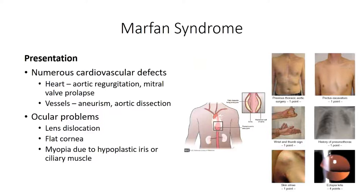Numerous cardiovascular effects have also been noted, due to the expression of elastin fibers in vascular connective tissue. This may lead to valvular prolapse and an increased risk of arterial aneurysm and aortic dissection. The condition also has an effect on the eyes and can lead to lens dislocation and myopia due to effects on the ciliary muscles.